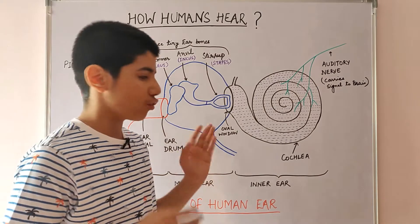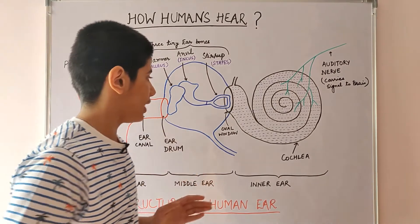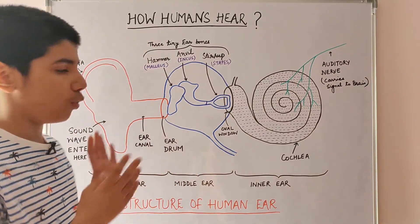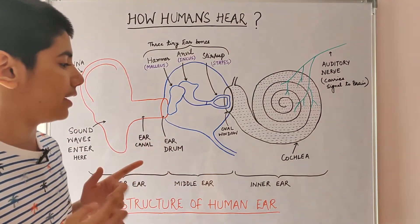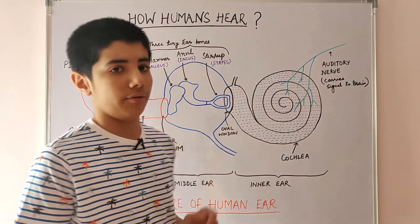The inner ear has the cochlea. One end of the cochlea is connected to the middle ear through the oval window, and the other end is connected to the brain through the auditory nerve.